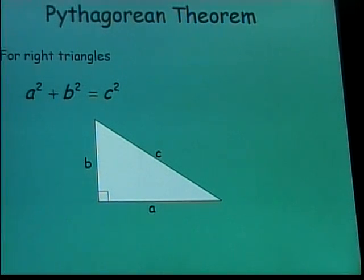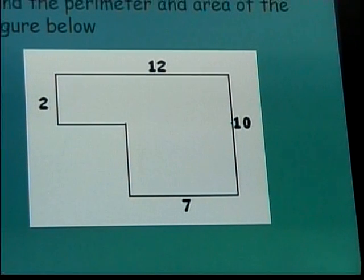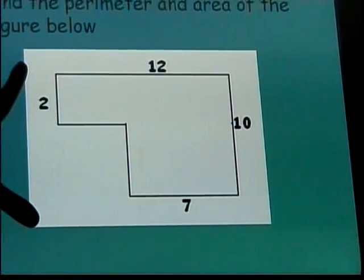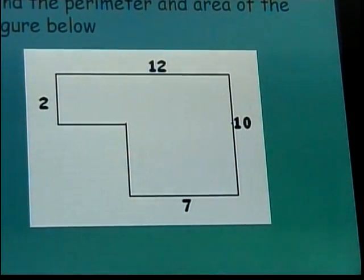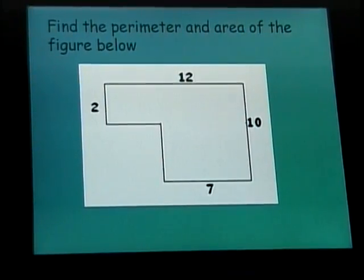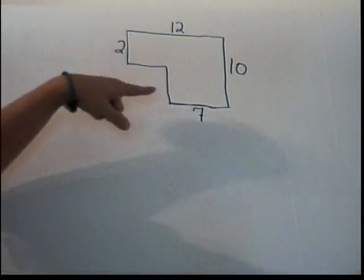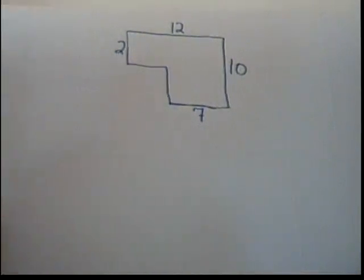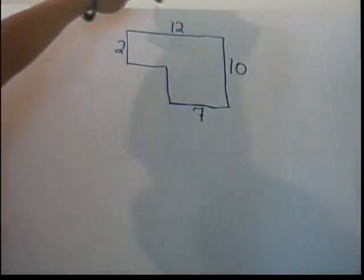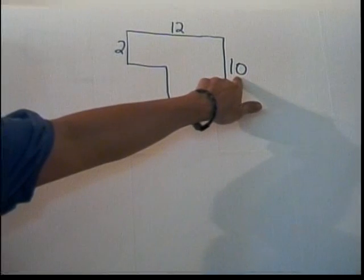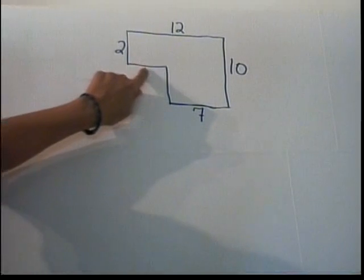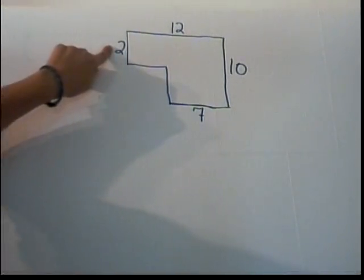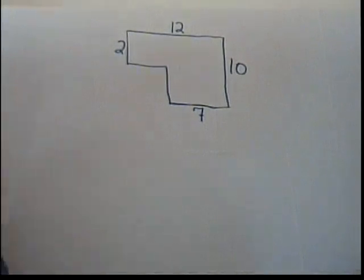Now we're ready to start some problems. Our first problem asks us to find the perimeter and area of a figure with sides labeled 12, 10, 7, and 2. To find the perimeter, we add the lengths of all the sides. Our shape has known sides of 12, 10, 7, and 2, plus two sides whose lengths we don't yet know, so we need to figure those out.